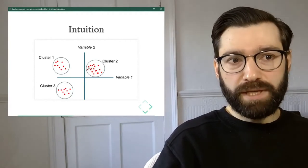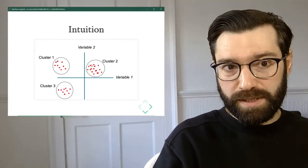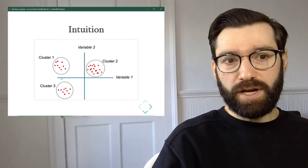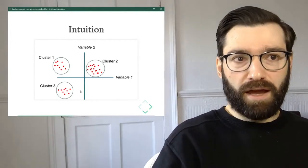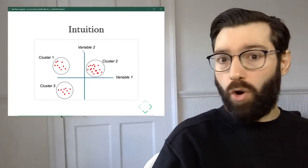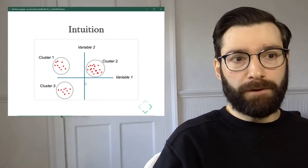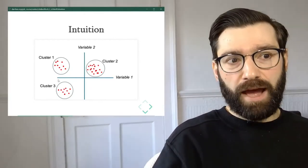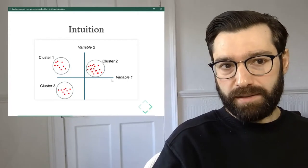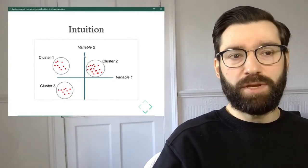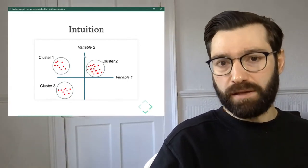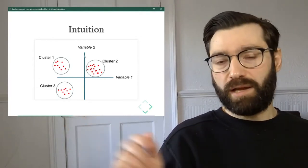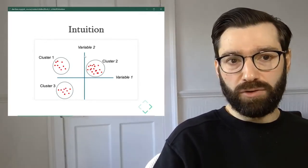Our dataset is made up of all of these points. Imagine that each of these points represents individuals. For example, variable one represents height and variable two represents weight. Or you could think of firms and variable one might be size and variable two might be turnover or sales.